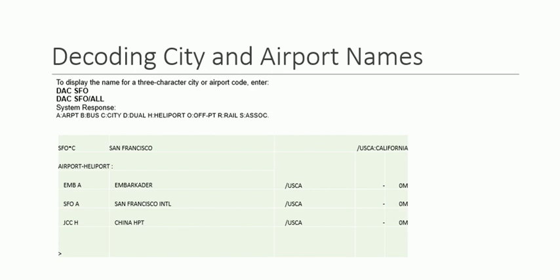This is similar to encoding. In encoding, we were writing the full name and getting the code. In decoding, as you have just seen, we write the code and we get the full name of the city.